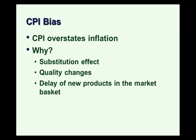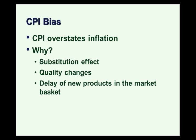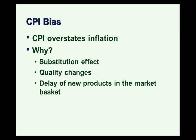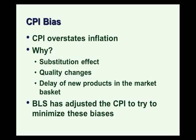Another issue is the delay of new products entering the market basket. Consider the ubiquitous mobile phone — it didn't even exist in 1968, and when mobile phones first came out, they've changed dramatically over time and were a lot more expensive than they are today. The delay of new products means the market basket doesn't capture the price decline that happens when a new product becomes more widespread — again, overstating inflation.